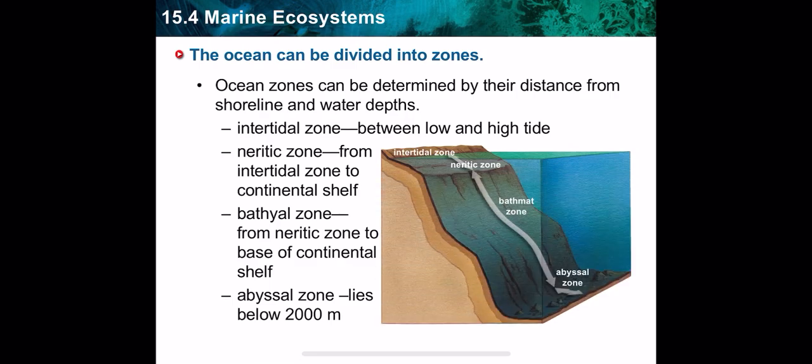Marine ecosystems are found in oceans and seas. The ocean is the largest water body, so do you think the ocean consists of only one zone with homogeneous abiotic and biotic factors where the same communities can live everywhere? Of course not. The ocean is divided into zones. The first zone is the intertidal zone, which is exposed to high tide and low tide.